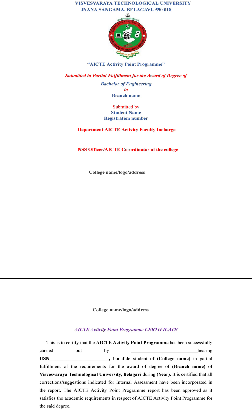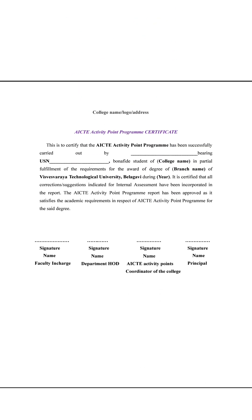This is the format they have provided. The first is a certificate which shows how you need to prepare it — you need to follow the same format. The second one is the college certificate, that is the AICTE activity points program certificate. You need to prepare it in the same format, adding the faculty in-charge, department HOD, AICTE activity points program coordinator of the college, and principal.